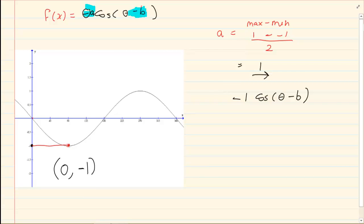So what did happen to the graph? It moved 90. So my b is equal to 90 degrees. So my final answer is minus 1 cos theta minus 90 degrees.